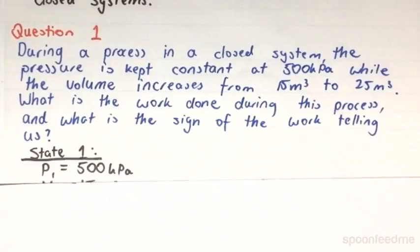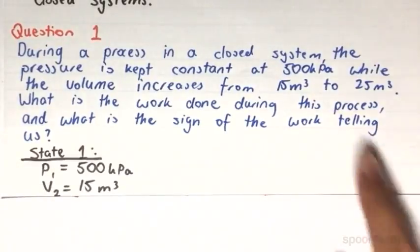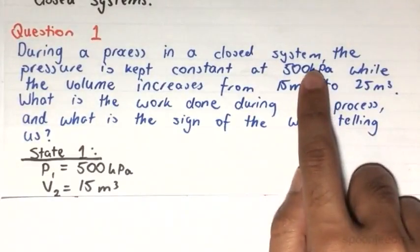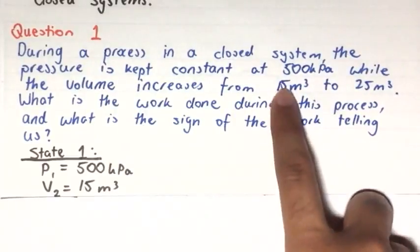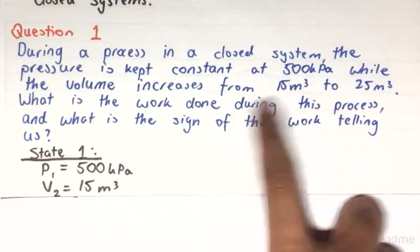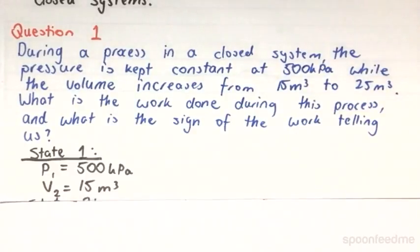So if we look at state 1, we know that the pressure is going to be 500 kilopascals, and the volume increases from 15m3, so it is suggested that it's going to be 15m3 at state 1.